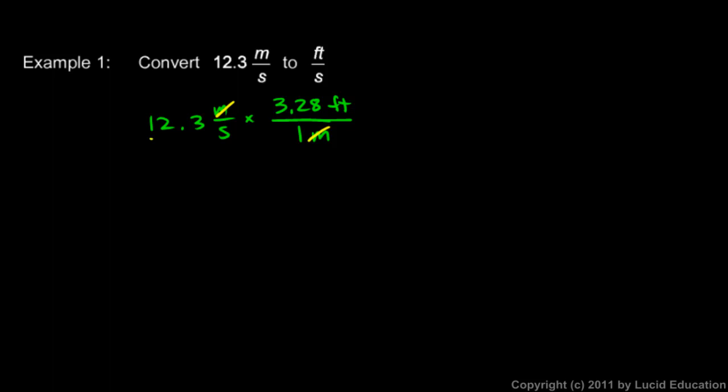And then my answer is going to be 12.3 times 3.28 feet per second. So you can pull out a calculator at this point. 12.3 times 3.28 comes out to 40.3. That's what I got from multiplying those two numbers. And then I keep my units here, feet and second, feet in the numerator, seconds in the denominator. And the meters are gone because those have canceled out.